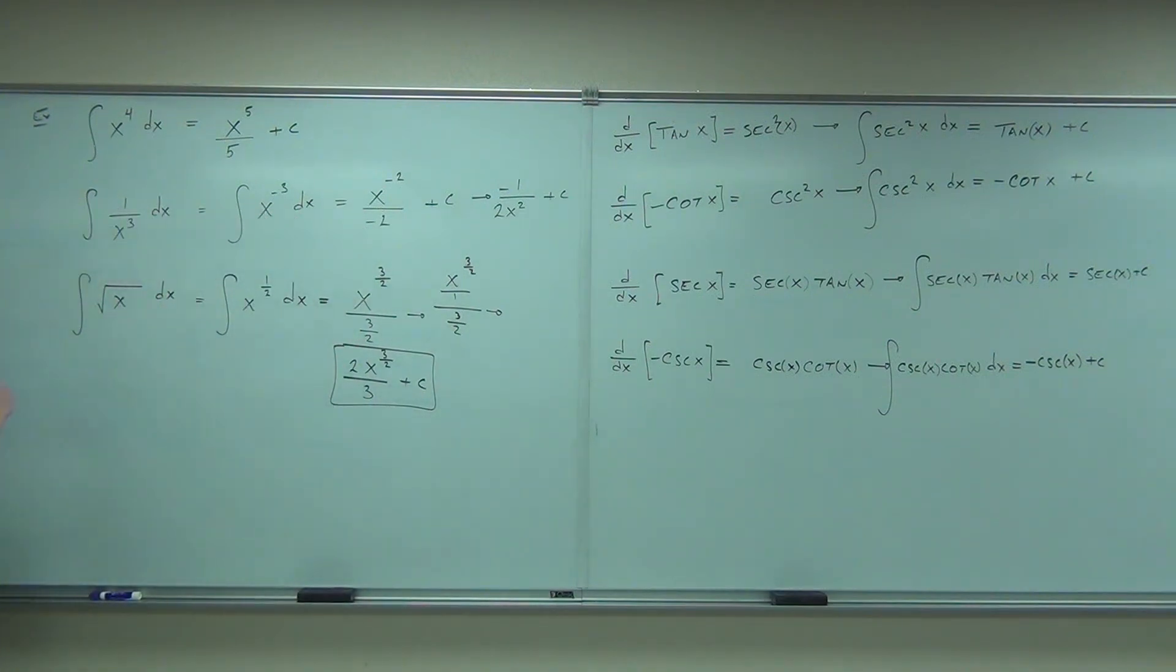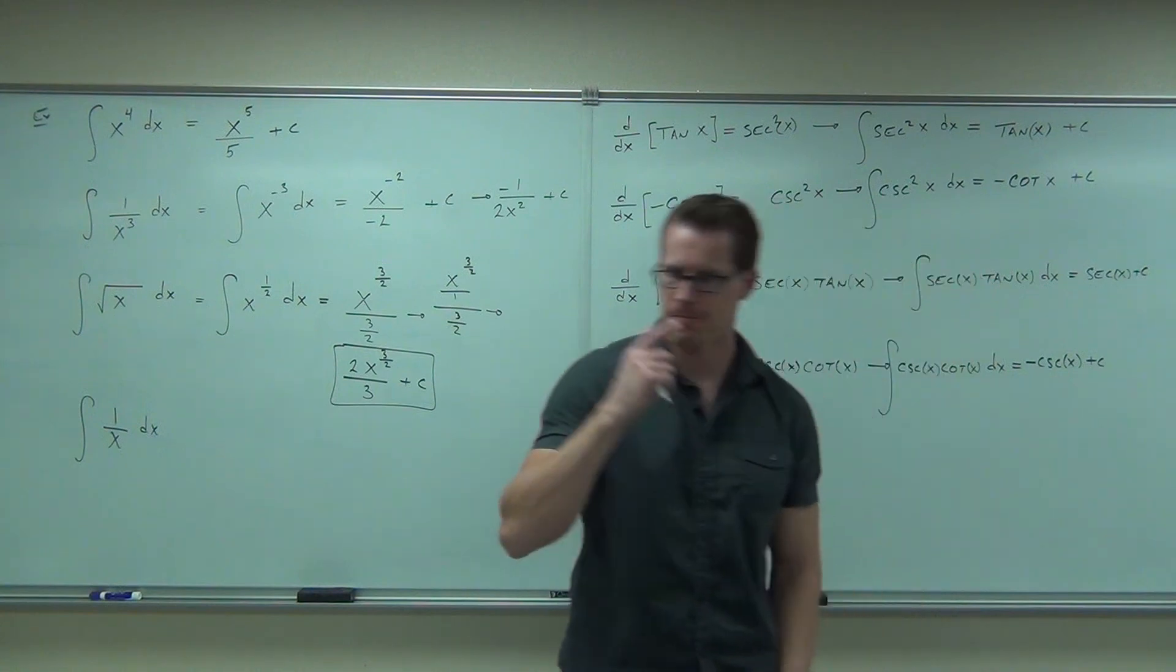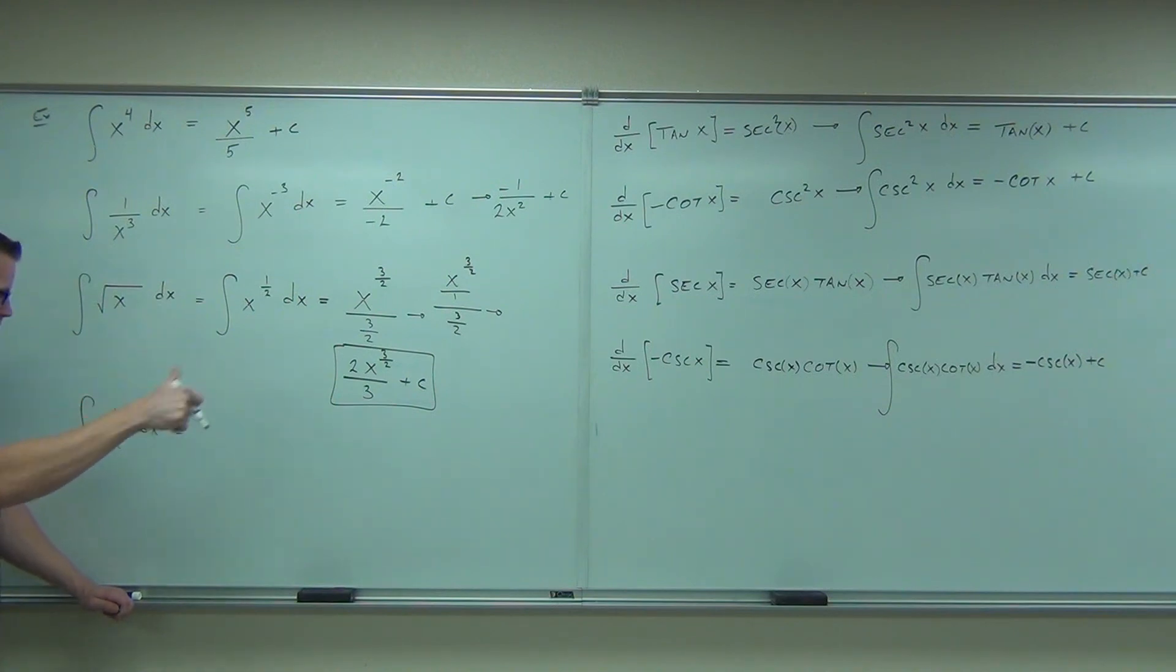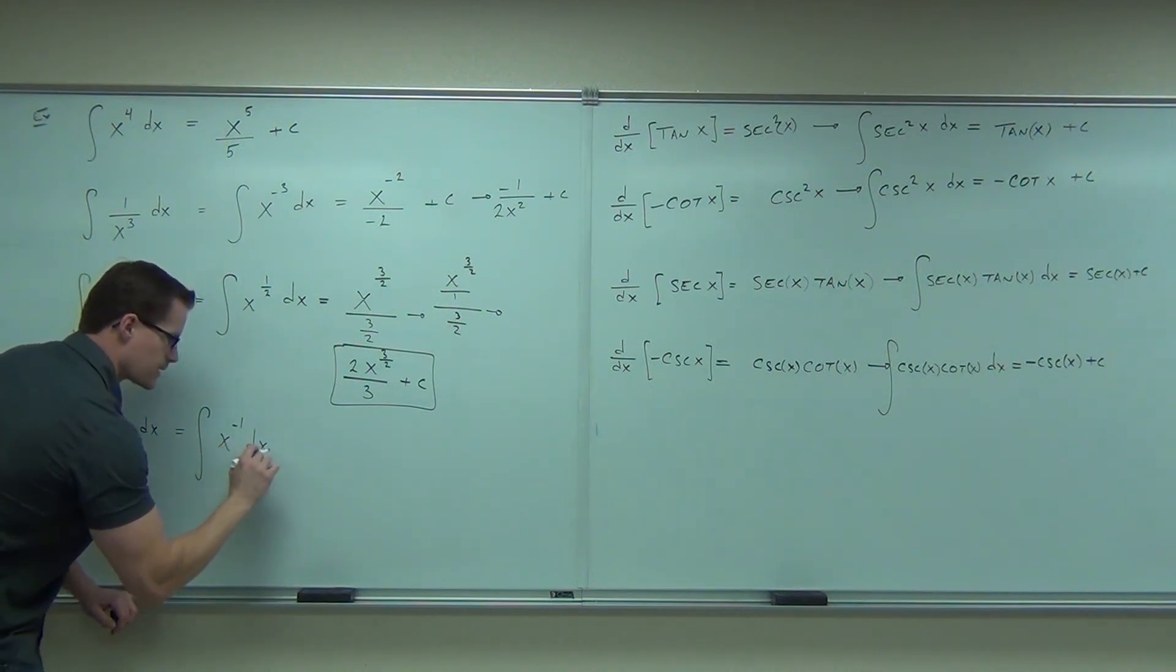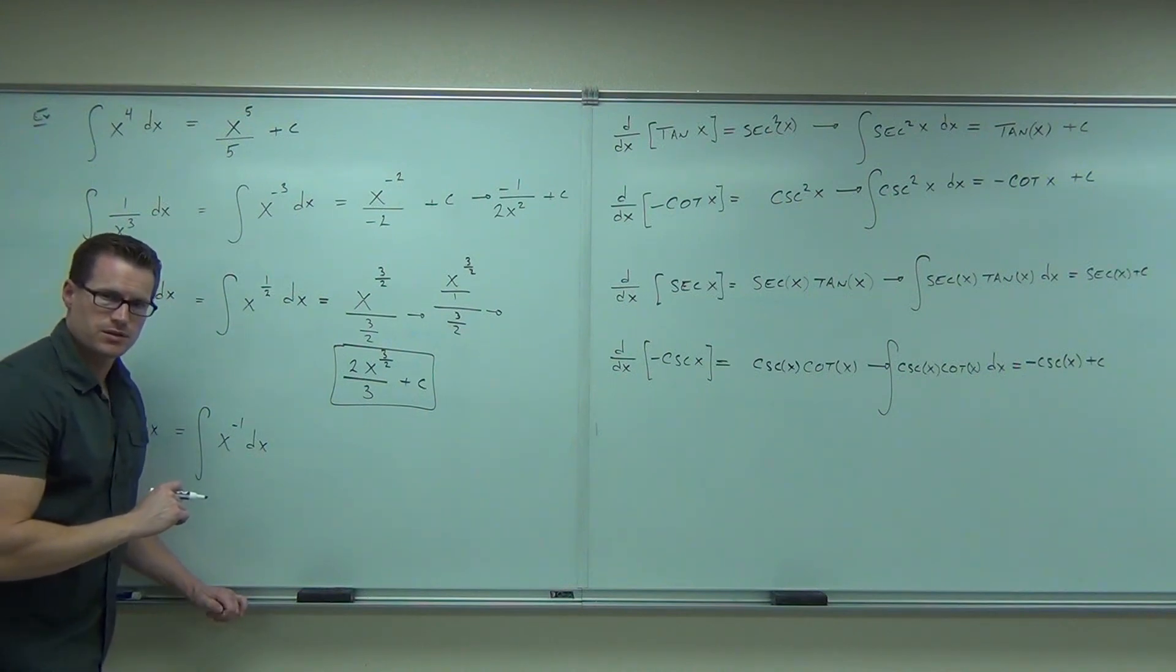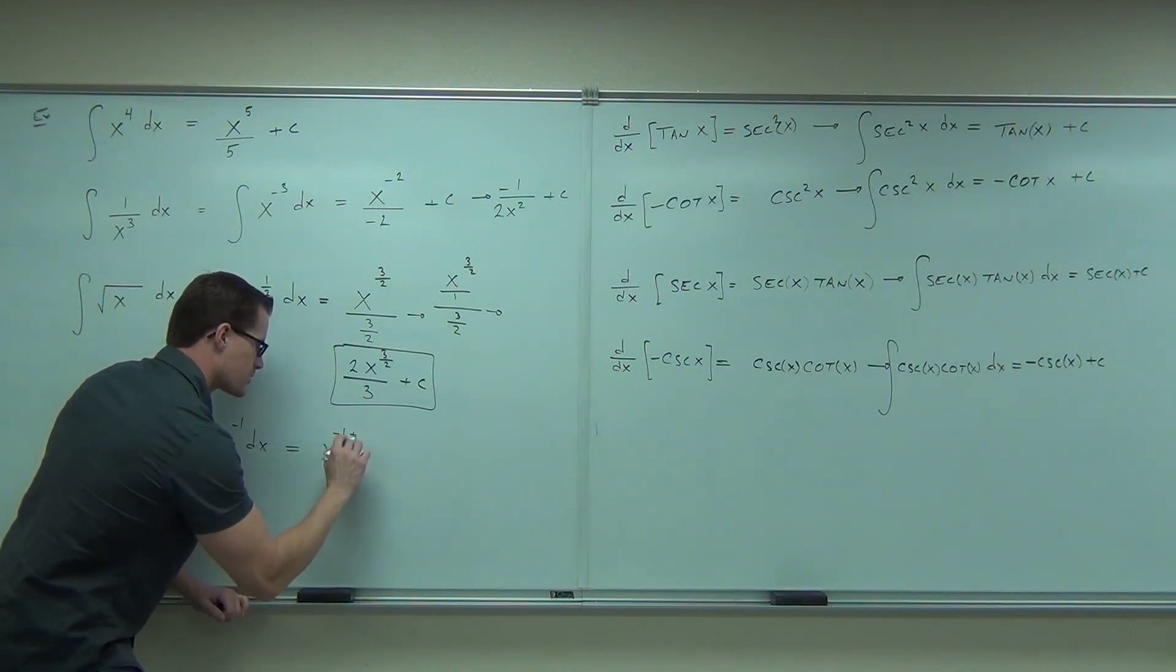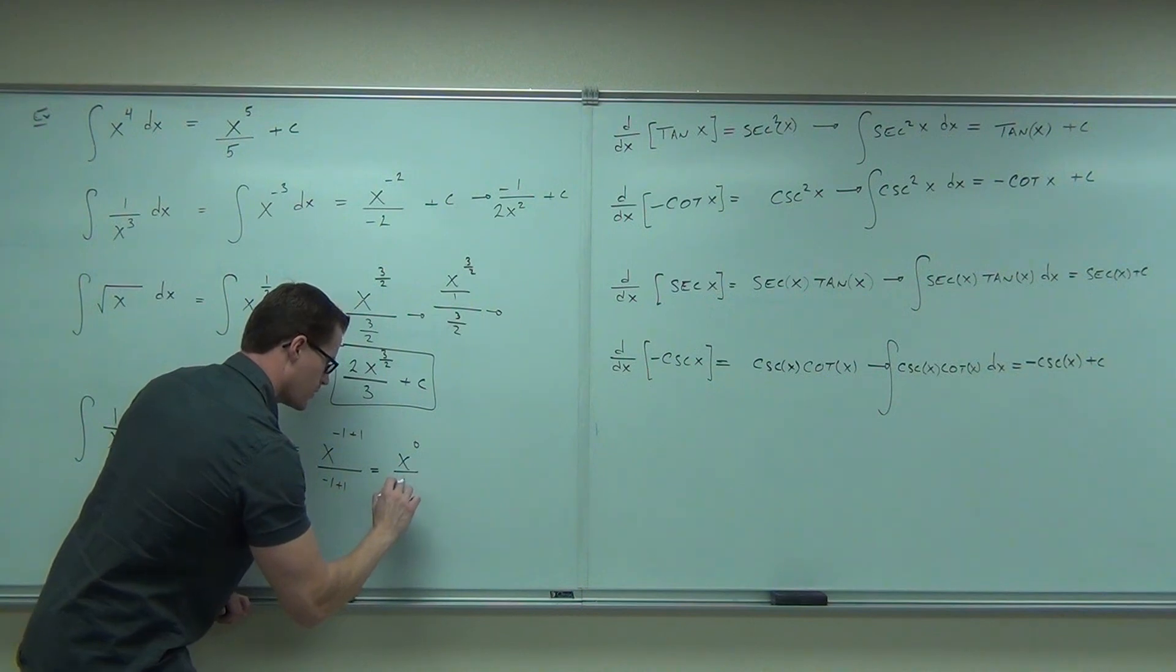Ready for one more? I'm not supposed to do this one. What do you do first? Now, play along. When you do this, you get... I'm going to do every step for you. You get x to the negative 1 plus 1 over negative 1 plus 1. Right? You get x to the 0 over 0. You get 1... Oh, crap. You get oh, crap.